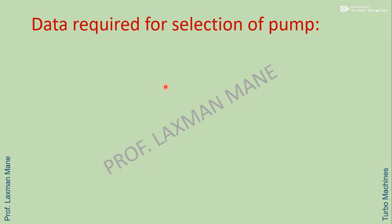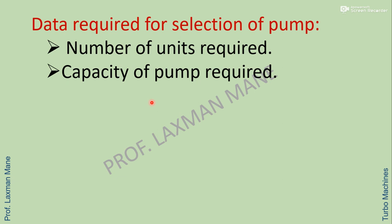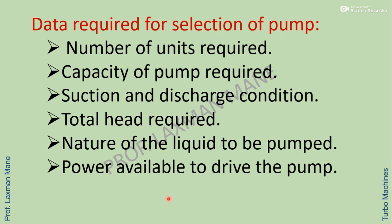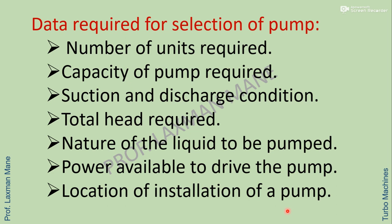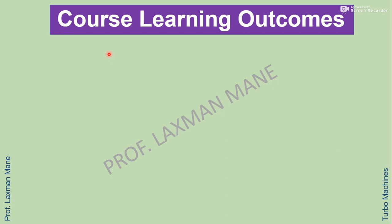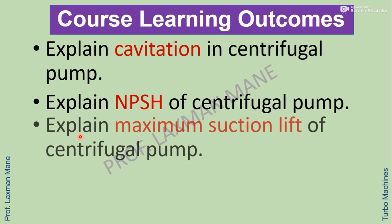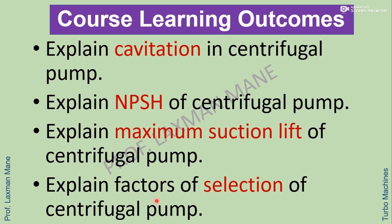Data required for selection of a pump includes: number of units required, capacity of pump required, suction and discharge conditions, total head required, nature of the liquid to be pumped, power available to drive the pump, and location of installation. At the end of this session you can explain cavitation in centrifugal pump, net positive suction head, maximum suction lift, and factors of selection of centrifugal pump.